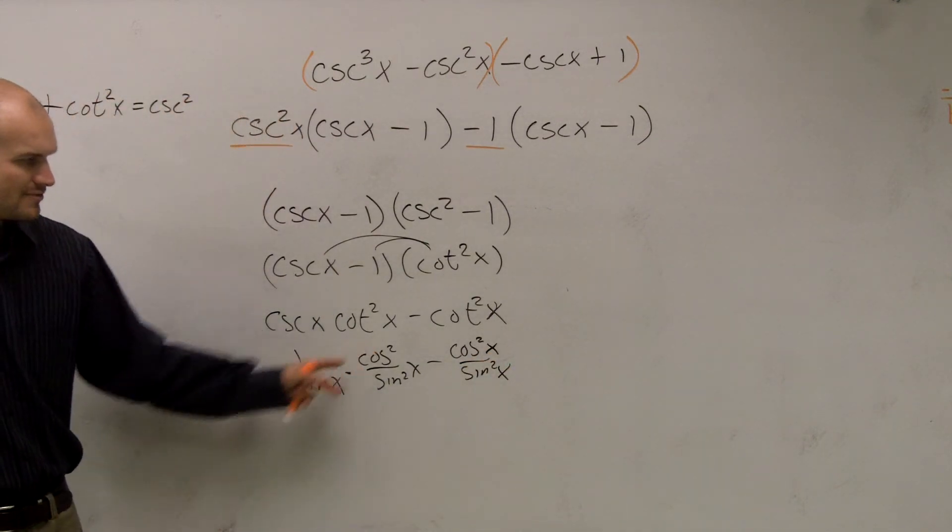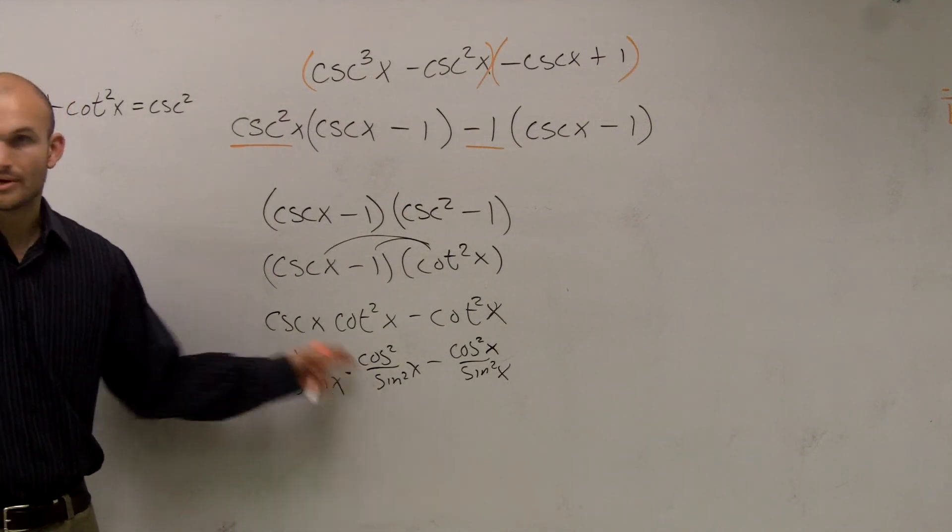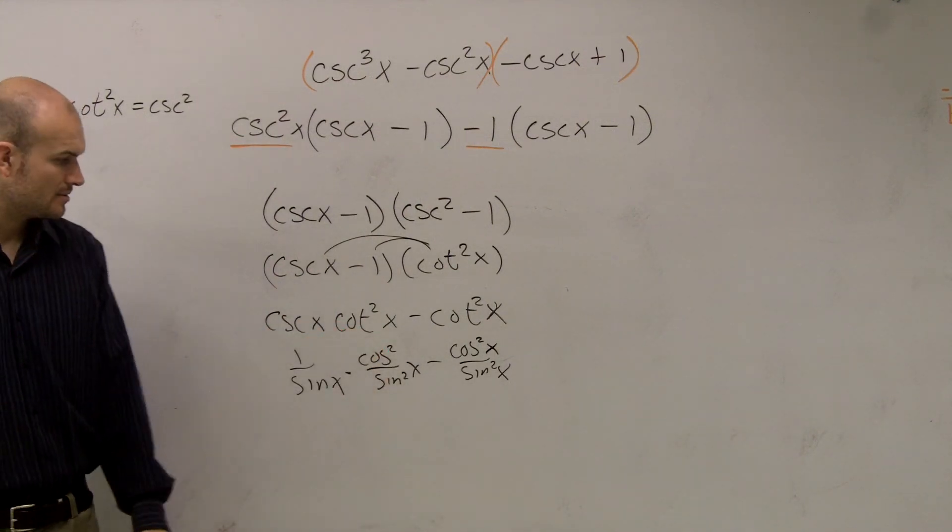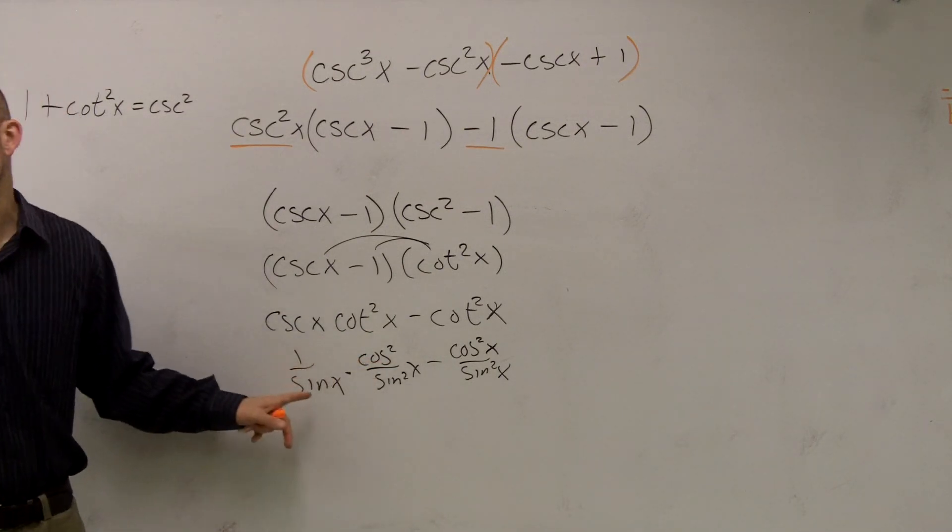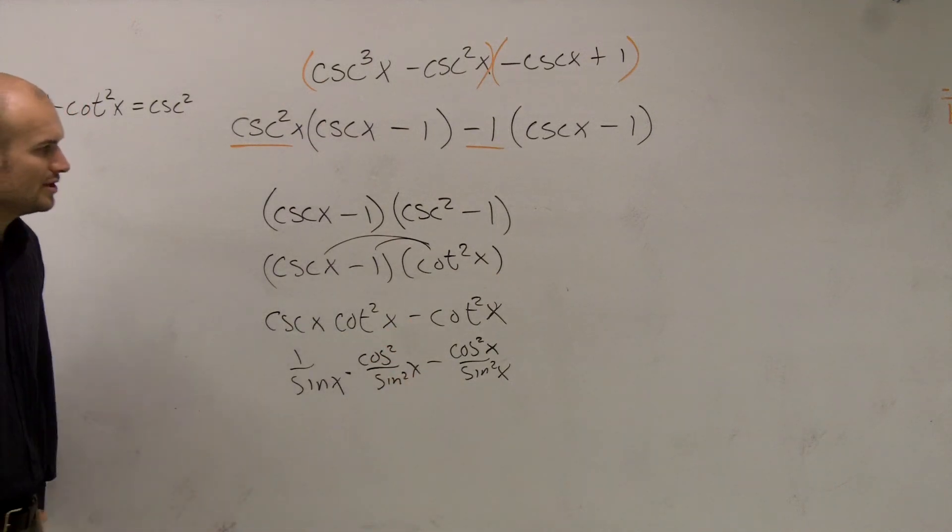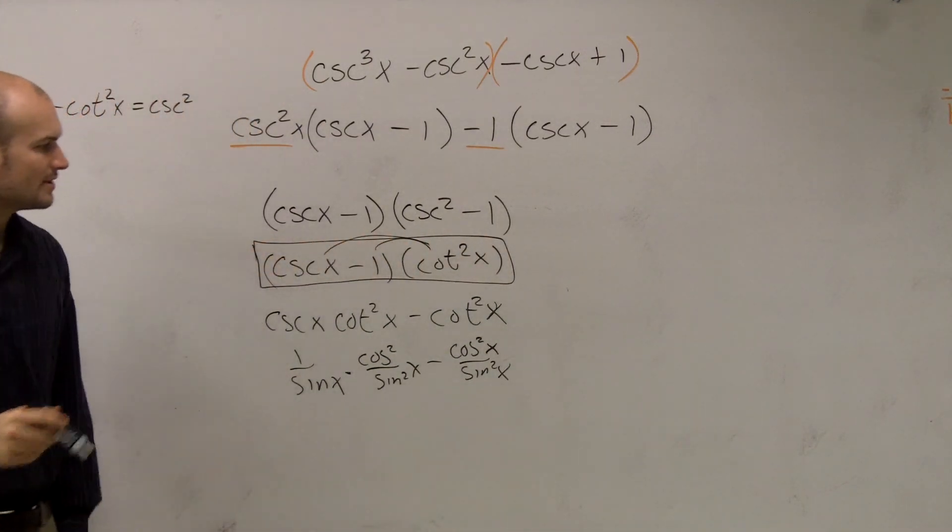And you guys can see that nothing really cancels out, right? Nothing really cancels out. I was hoping they... Well, remember, this cotangent is multiplied by the cosecant, so you can't subtract it. So, really, my simplest form is going to be right there. Cosecant x minus 1 times cotangent squared.